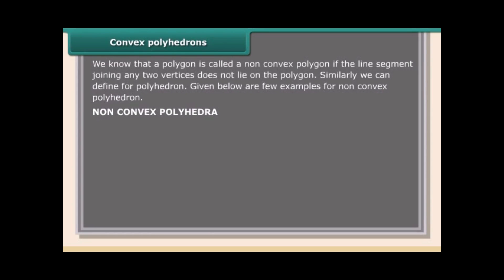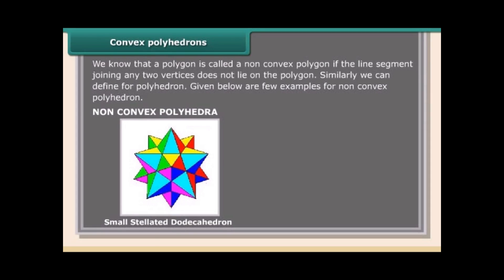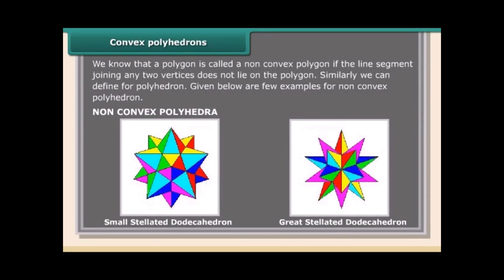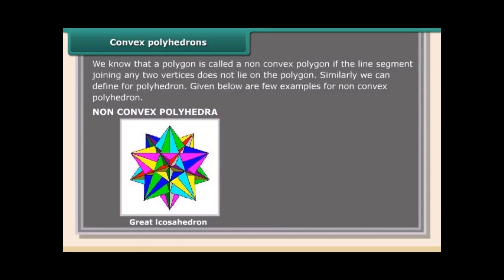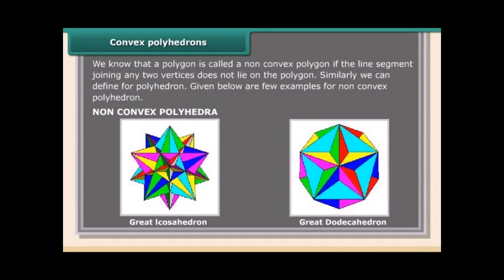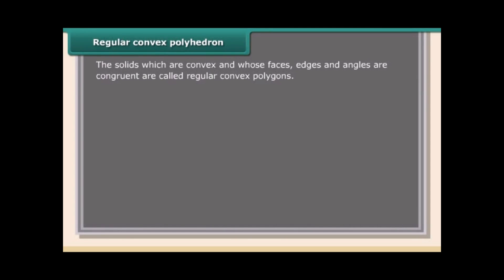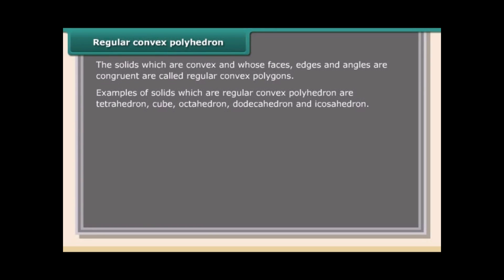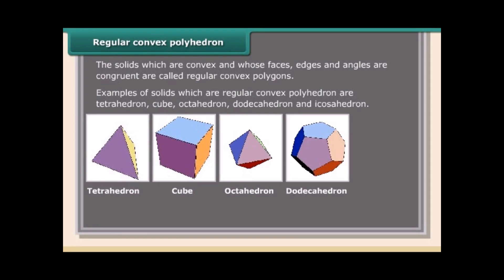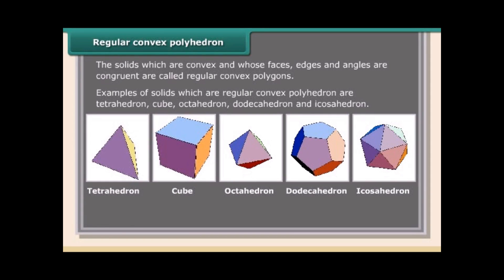Examples of non-convex polyhedrons include the small stellated dodecahedron, great stellated dodecahedron, great icosahedron, and great dodecahedron. Regular convex polyhedrons are solids that are convex and whose faces, edges, and angles are congruent. Examples include tetrahedron, cube, octahedron, dodecahedron, and icosahedron. A regular octahedron has eight equilateral triangles as faces.